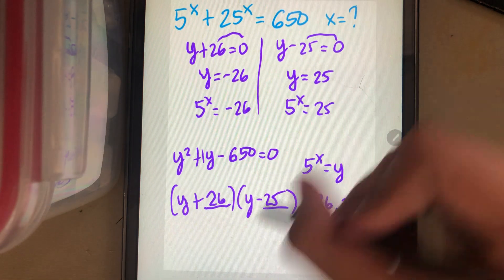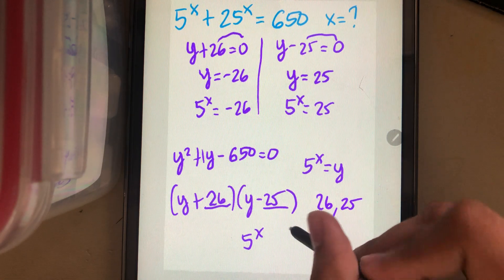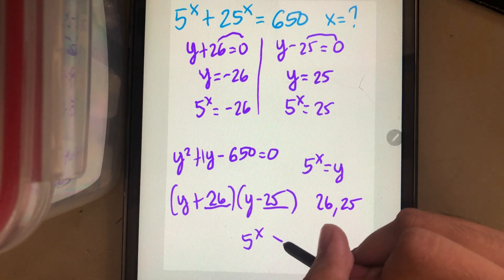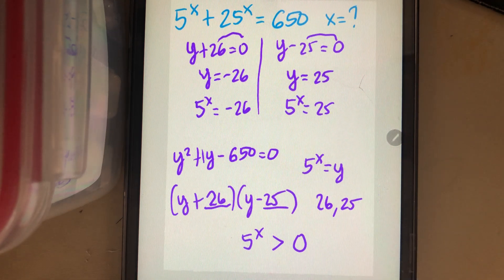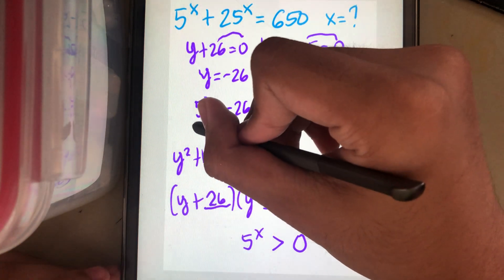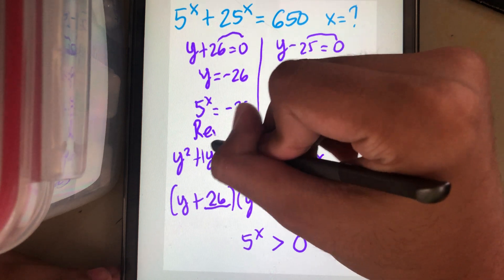But 5 power x should be greater than 0. So the 5 power x equal to negative 26 is rejected.